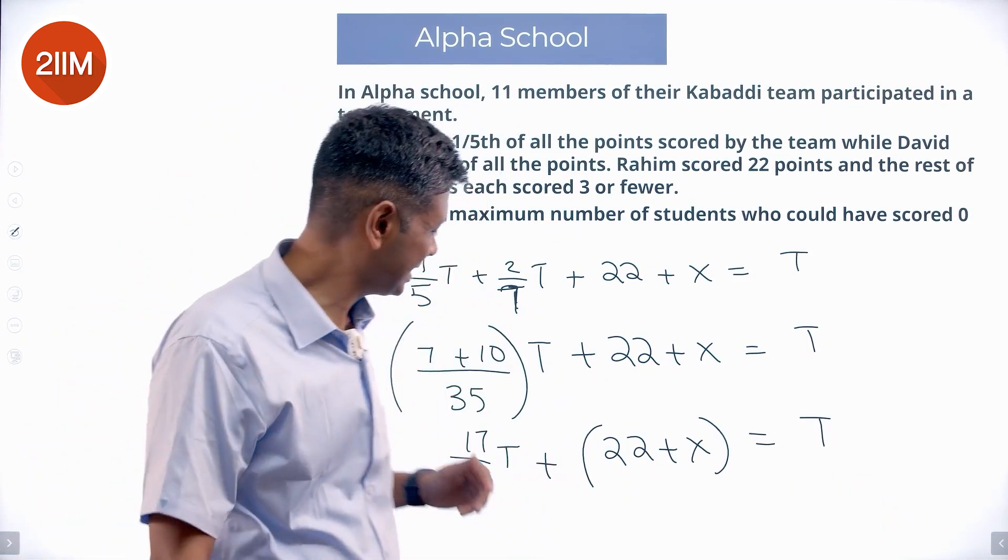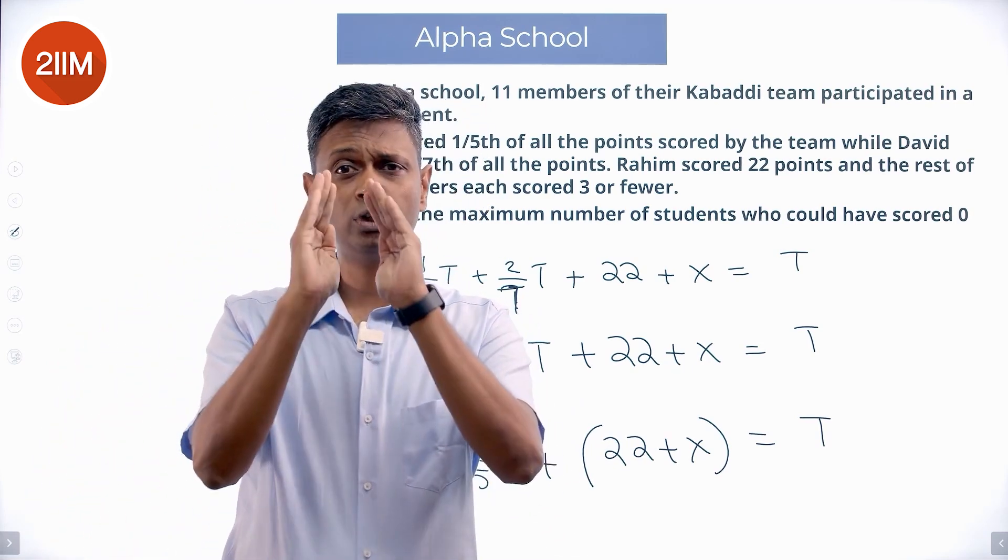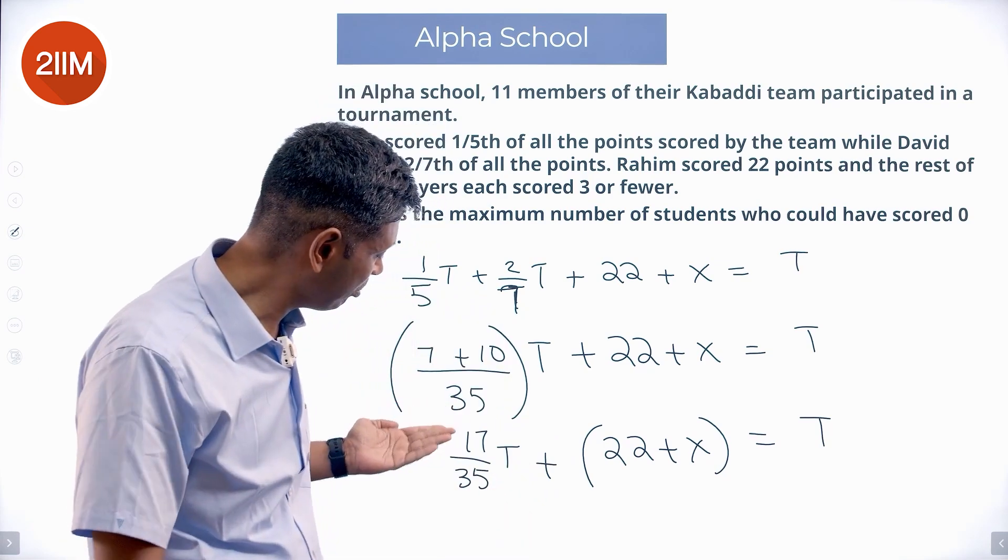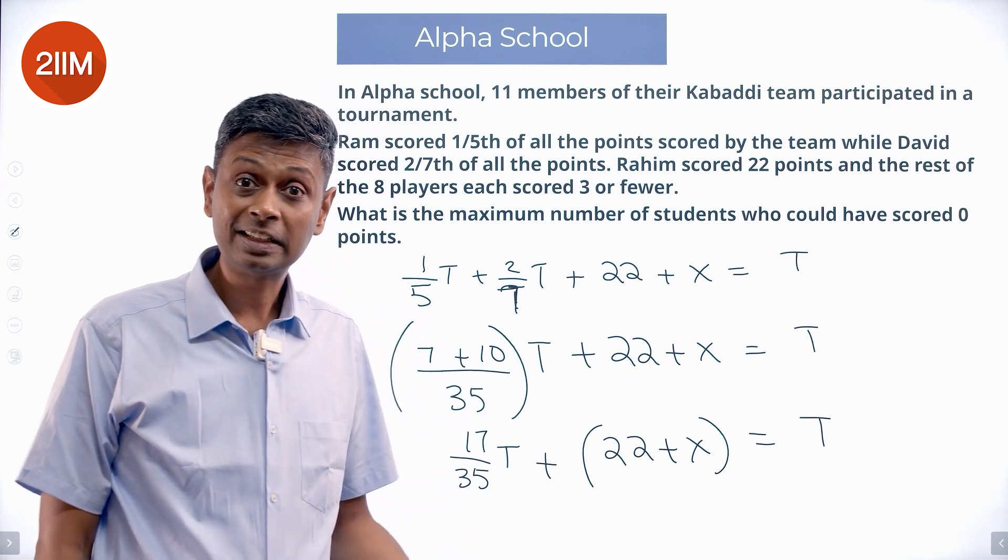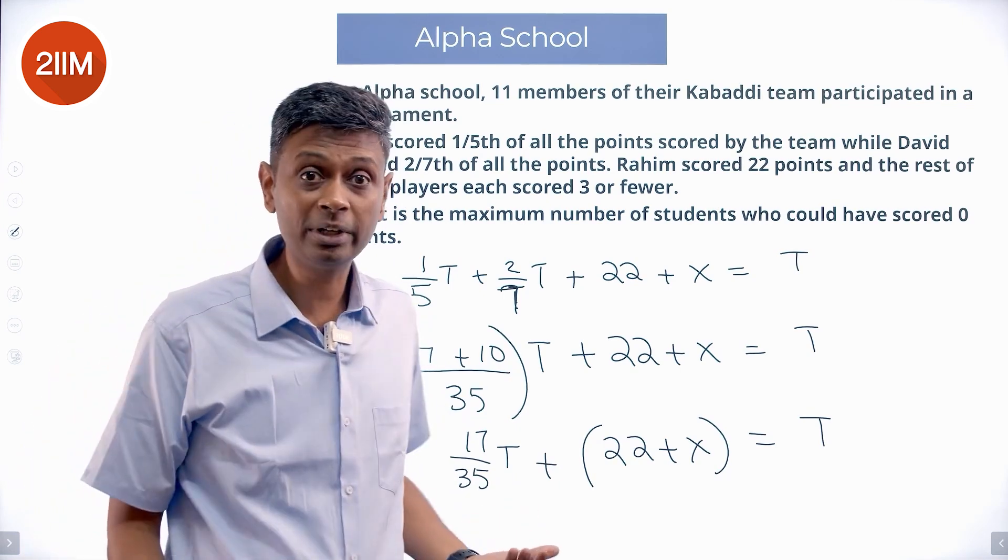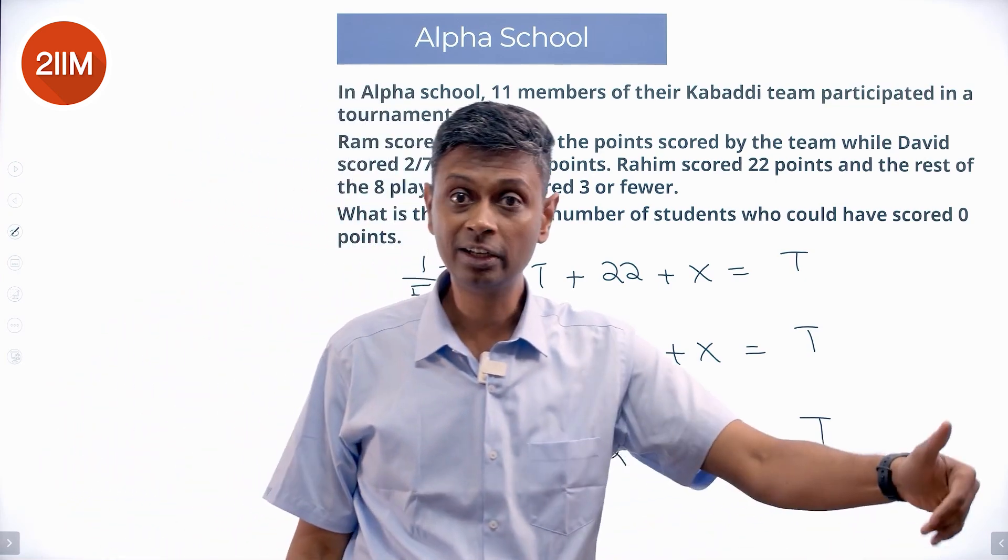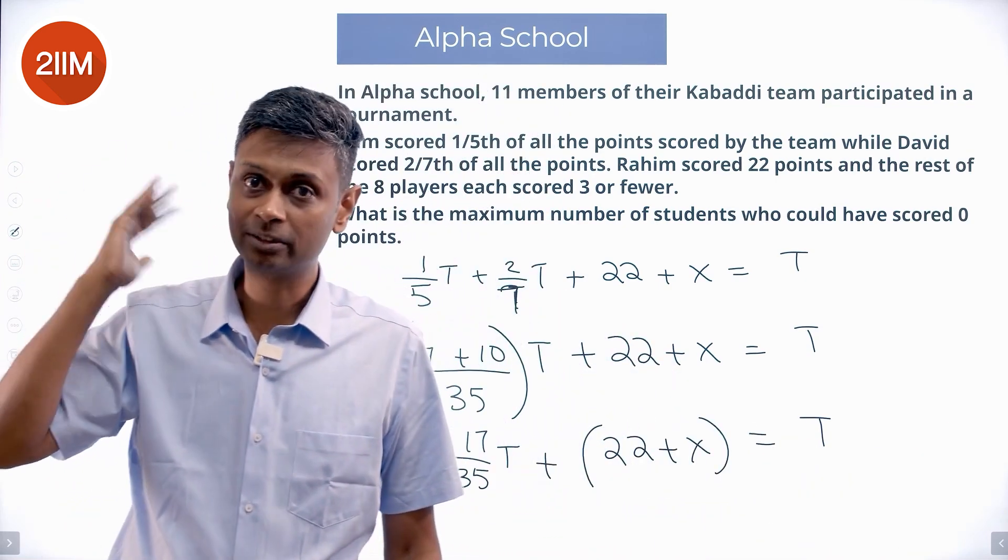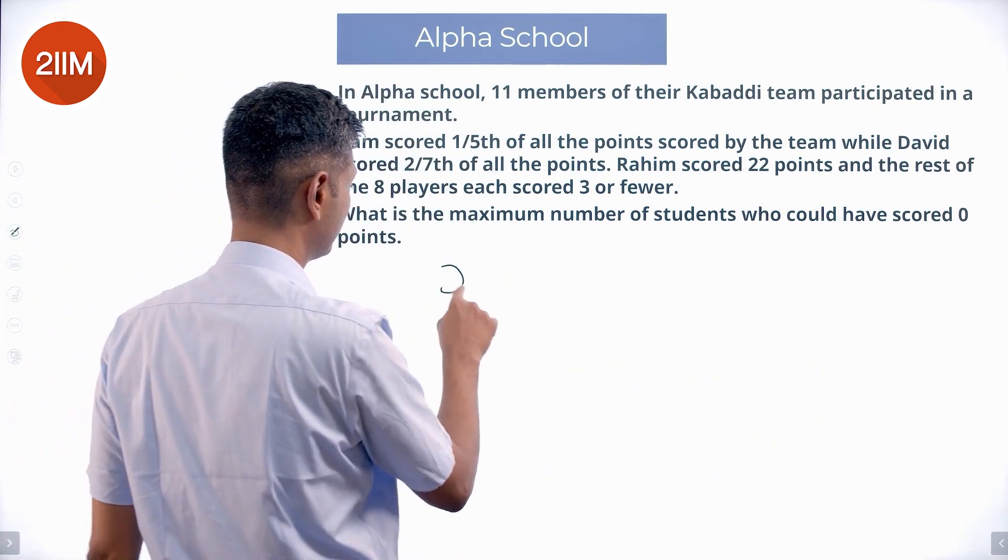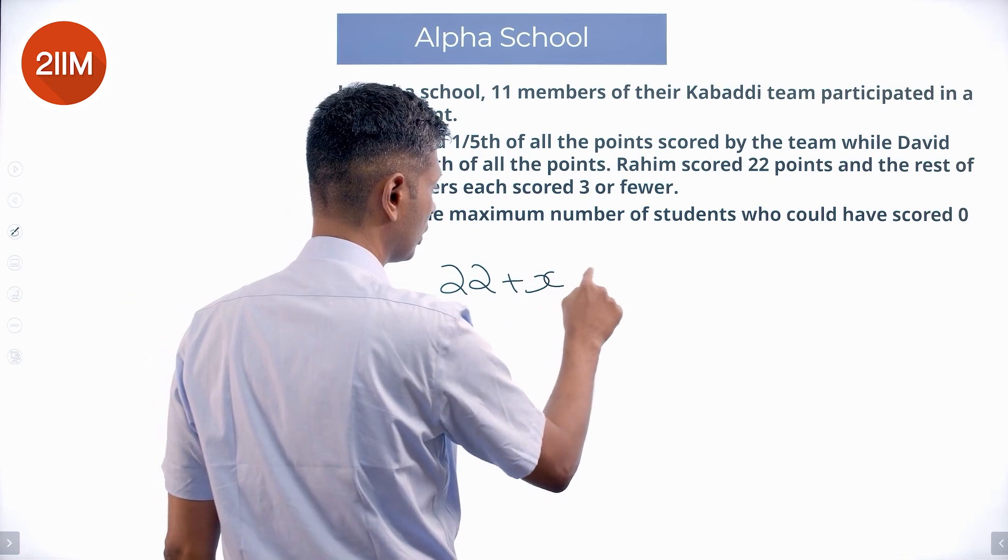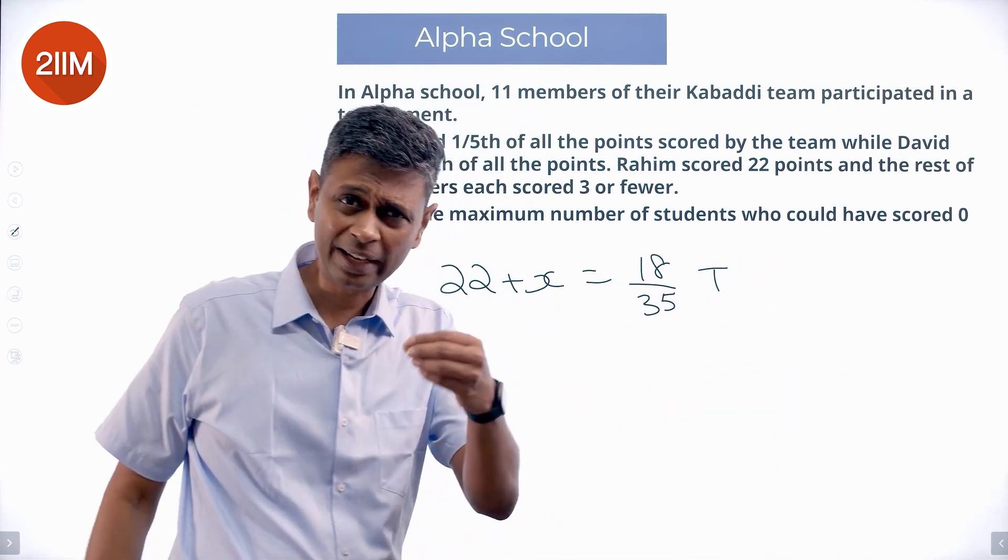Now I'm through. 17 by 35, these two guys account for. Out of a total, 17 by 35 of it, those two guys account for. The remaining should be 18 by 35. It's like 35 parts are there. Out of the 35 equal parts, these two have taken 17. The other should take the remaining 18. So I know my 22 plus X is 18 by 35 of total.